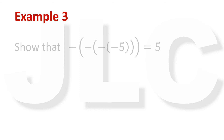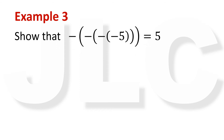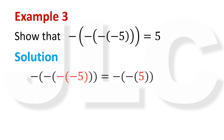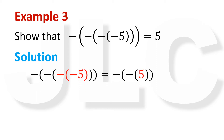Example 3: Show that the negative of negative of negative 5 equals 5. From the previous example, we know that negative of negative A is A. In this case, A is 5. So we first evaluate negative of negative 5, which is 5. And the negative of that negative 5 is 5.